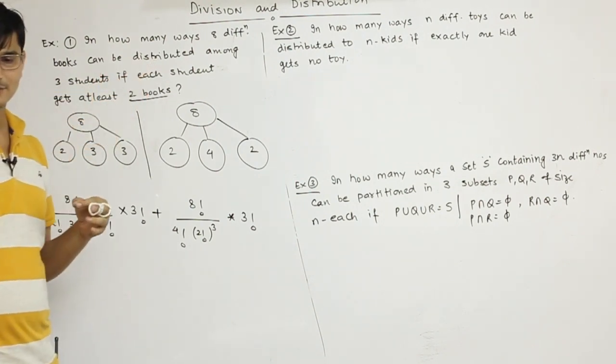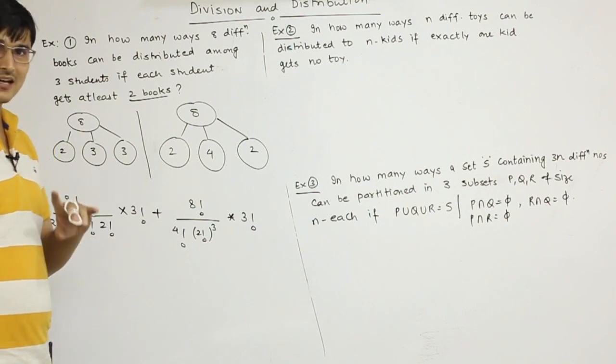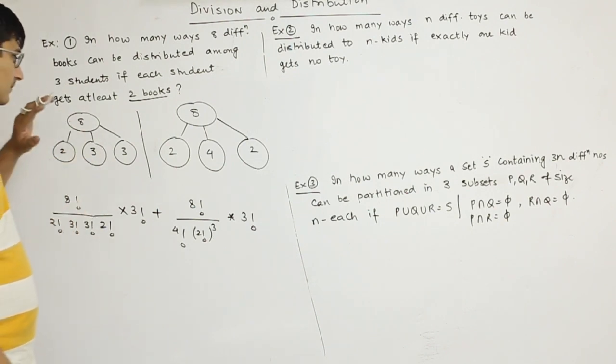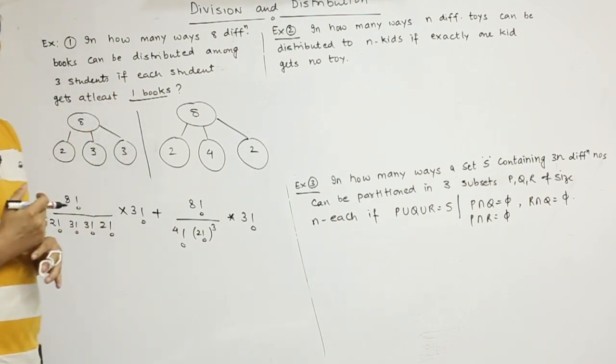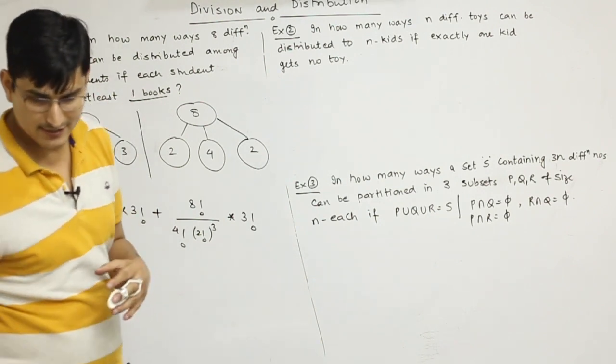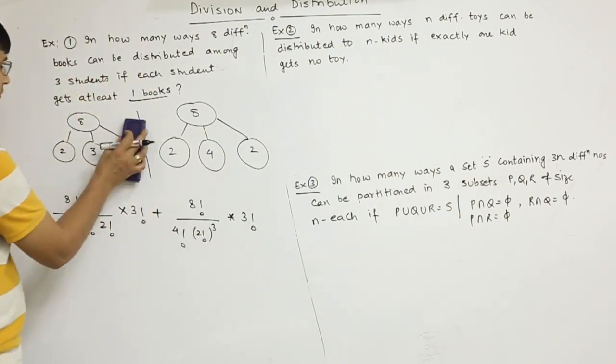If each student gets at least two books. If it is the same question, which means each child gets at least one book, if you want to apply the formula.